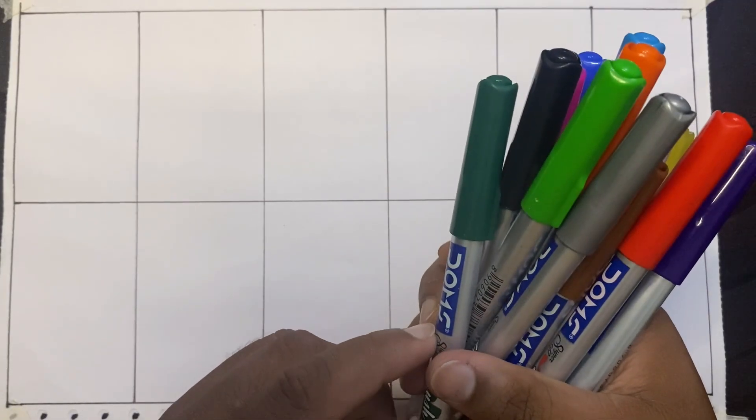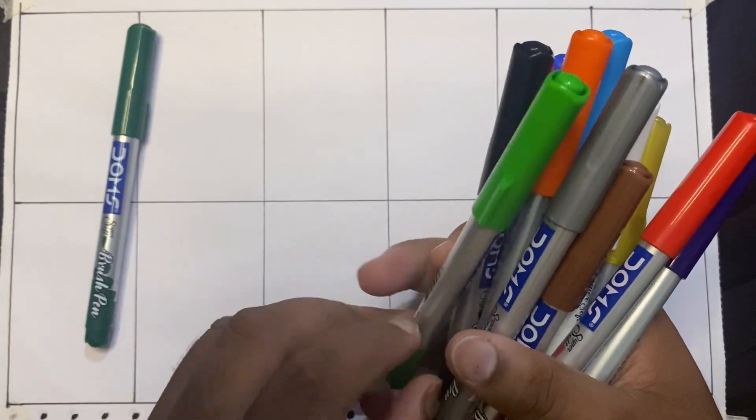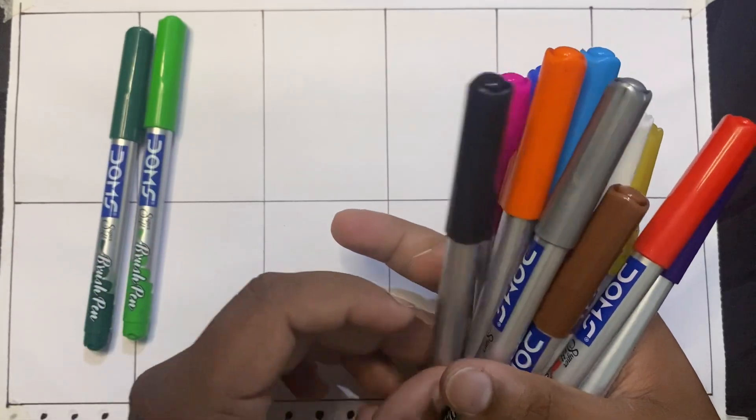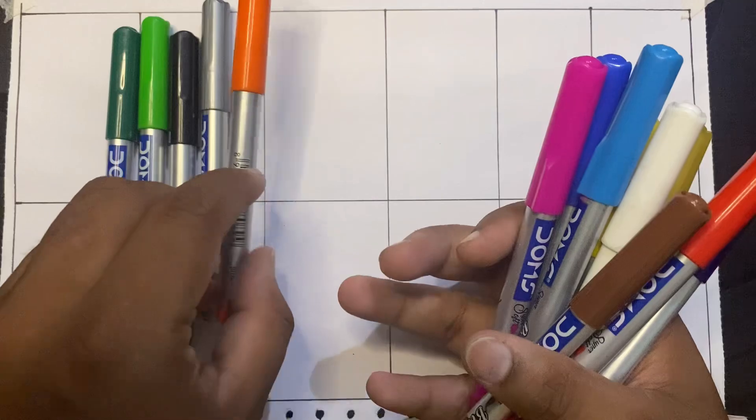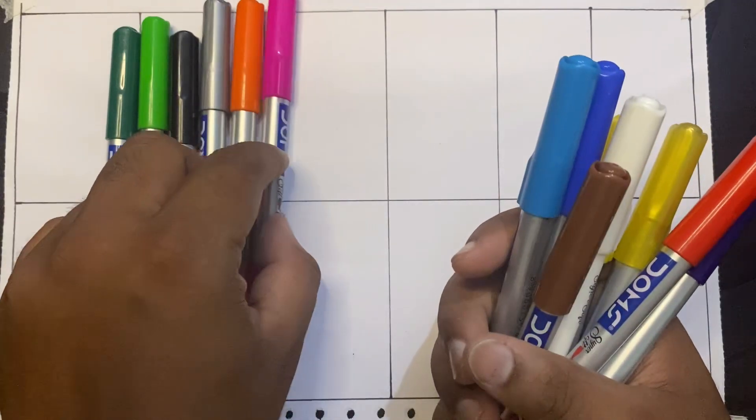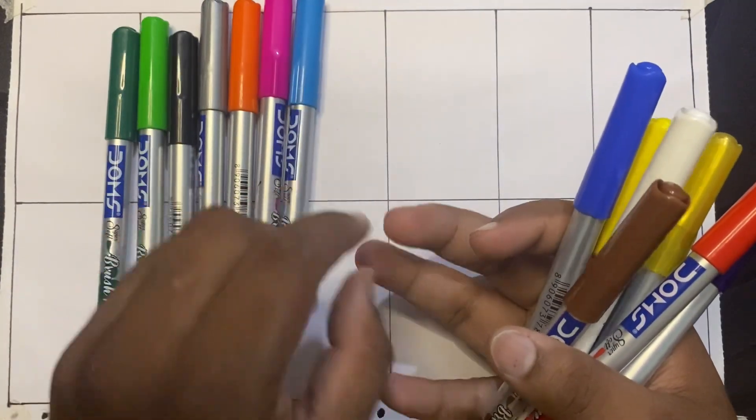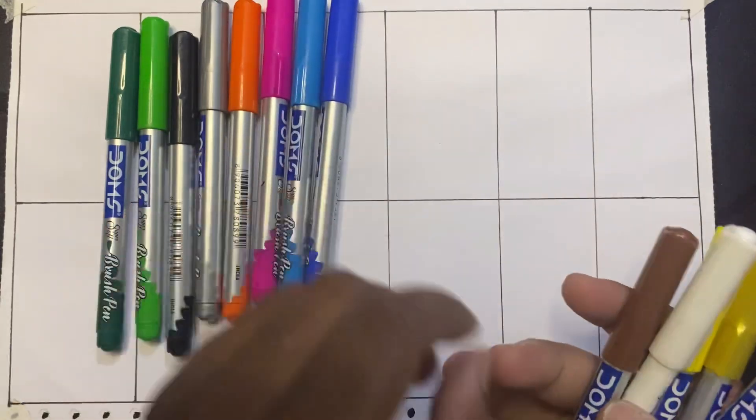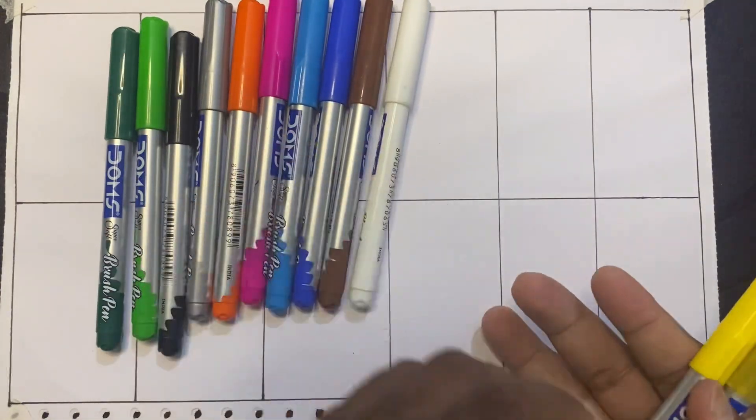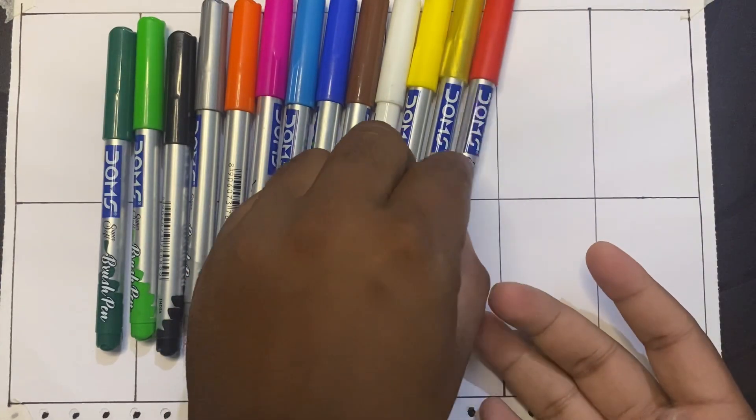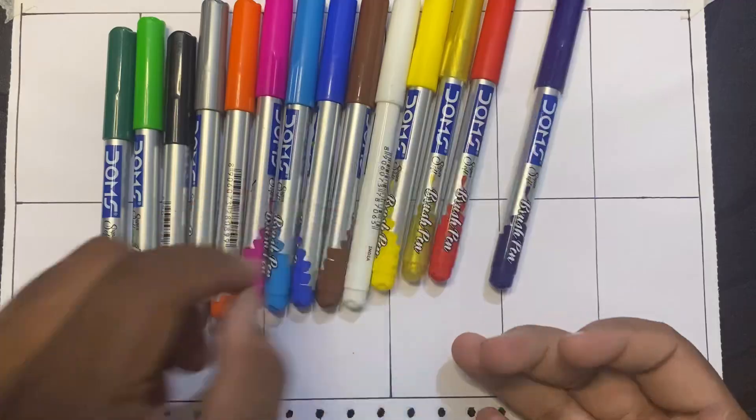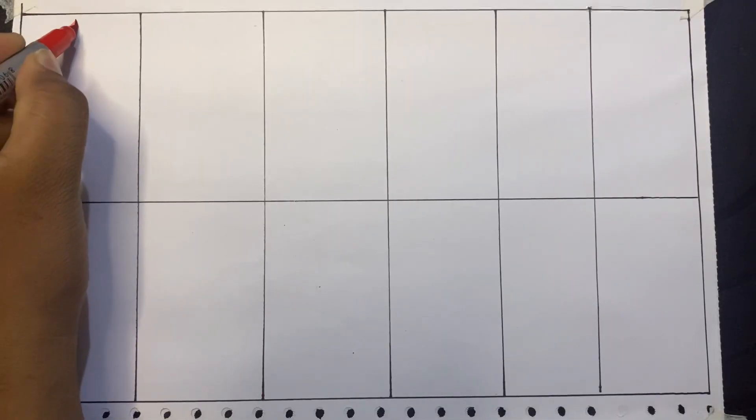Hello kids, let us learn the colors: dark green, green, black, silver, orange, pink, sky blue, blue, brown, white, yellow, golden, red, purple. Now let's learn the counting.